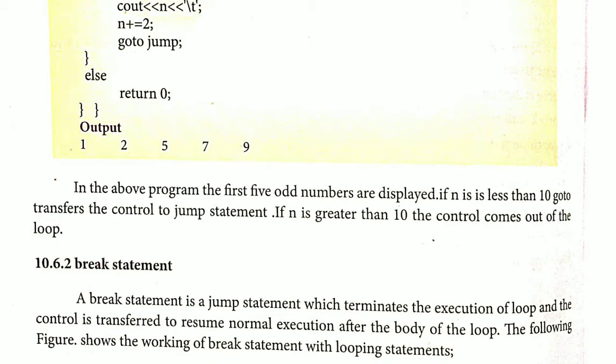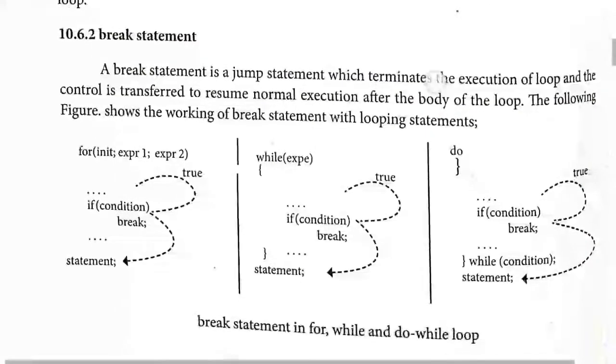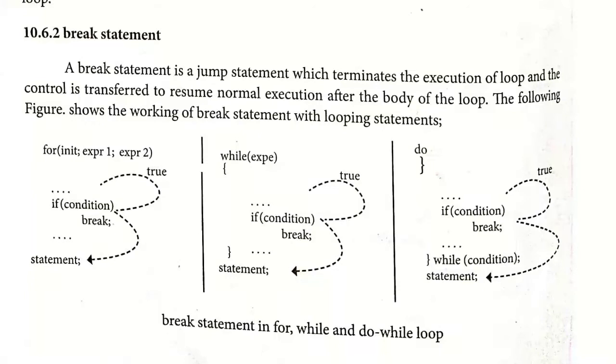Under goto statement there are two types: forward jump and backward jump. Goto is a keyword and a label will be there. If the label is connected towards the end of the program it is known as forward jump; if the label is present towards the top or starting of the program it is known as backward jump. We have seen an example of this in the last class.